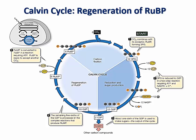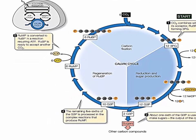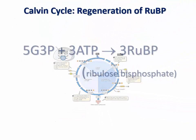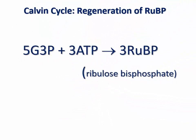In the third process of the Calvin cycle, ribulose bisphosphate is regenerated from G3P. Ribulose bisphosphate serves here as the carbon dioxide acceptor. This process of ribulose bisphosphate regeneration is powered by ATP, and the overall reaction is shown here.